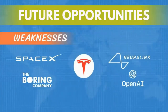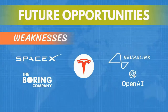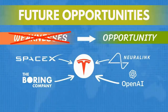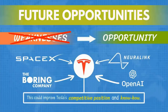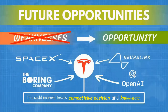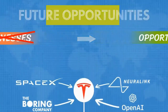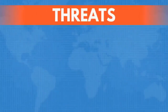Moving forward: one of the weaknesses we mentioned was that Elon Musk divides his time between several companies. Well, this can be a problem but also can be highly beneficial in the right circumstances. Elon Musk is involved with firms like SpaceX, The Boring Company, neurotechnology firm Neuralink, and nonprofit organization OpenAI. At some point, it is highly likely that synergies between these organizations could help Tesla improve its competitive position and know-how, providing a valuable advantage against traditional auto producers.